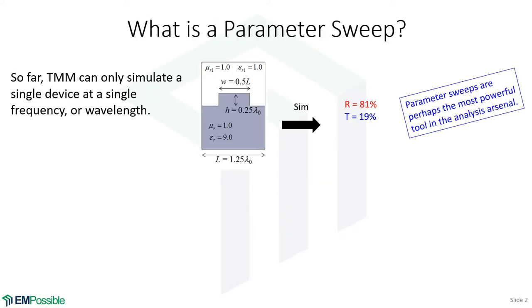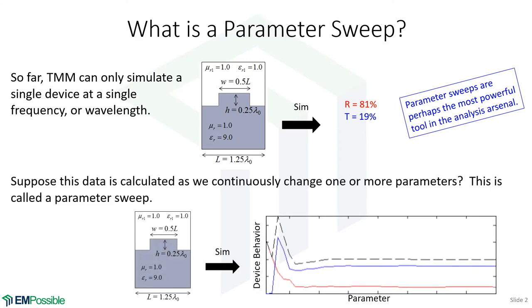Parameter sweeps are probably the most powerful tool you will have in your simulation arsenal. Here we're looking at some kind of device, and up to now we've discussed simulating it at a single frequency or single wavelength. What if we wanted to study this device and how it responds as a function of wavelength, calculating transmission and reflection over a whole span of wavelengths? Or maybe plot reflection and transmission as we change the height of a tooth on a diffraction grating — keeping wavelength fixed and sweeping the height. That's what we call a parameter sweep.